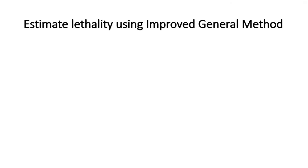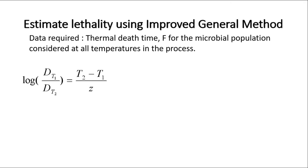Next, let's see how to estimate lethality of a process using the improved general method. This general method was introduced by Professor Paul Singh in his book 'Introduction to Food Engineering,' while the improved general method has been demonstrated in his tutorial video. To use the general method, we need to have the thermal death time F for the microbial population considered at all temperatures during the preservation process. If you've learned about Z value, you should already be familiar with this equation.